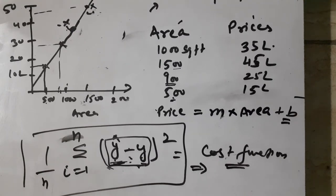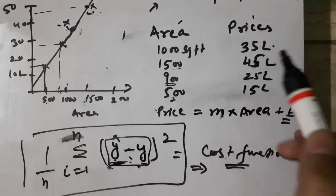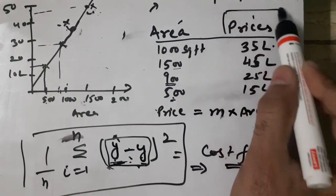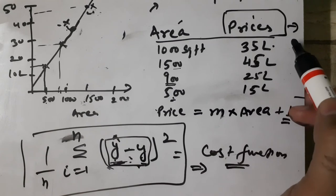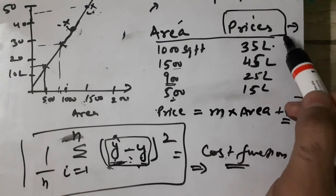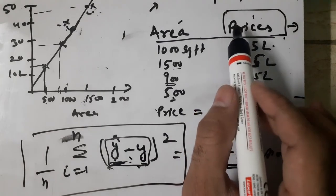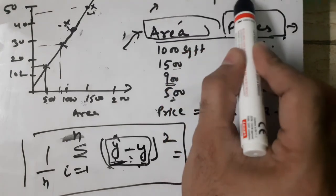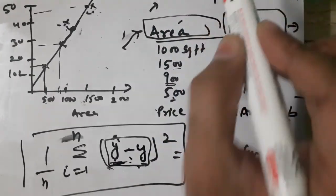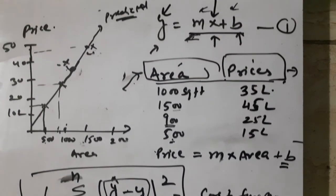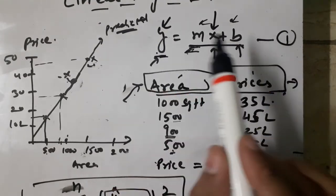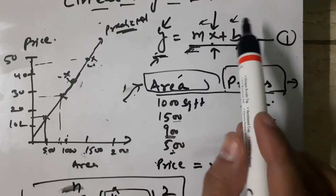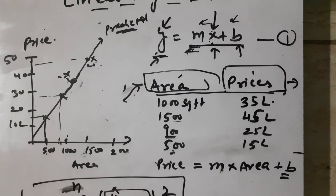In this example we have only one independent variable — area — and one dependent variable — price. Price is dependent because we are predicting it using area. In the equation y = mx + b, y is the dependent variable and x is the independent variable. However, in real-life problems we won't have only one independent variable.